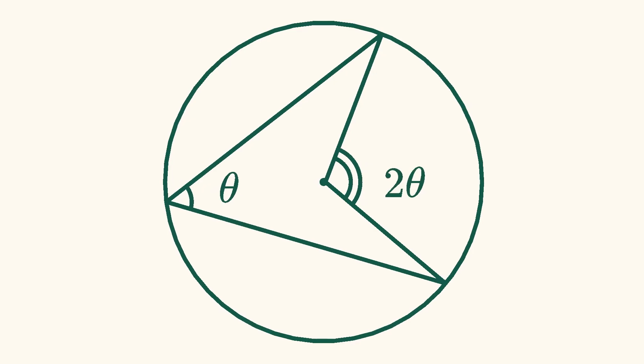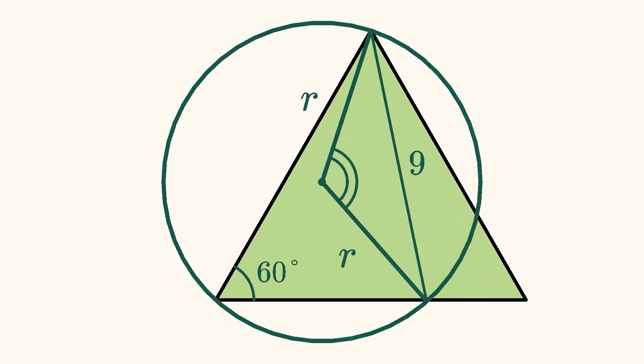The central angle theorem states that the measure of a central angle is twice the measure of an inscribed angle that intercepts the same arc on a circle. Since the inscribed angle in our problem is 60 degrees, that means the central angle is 120 degrees.